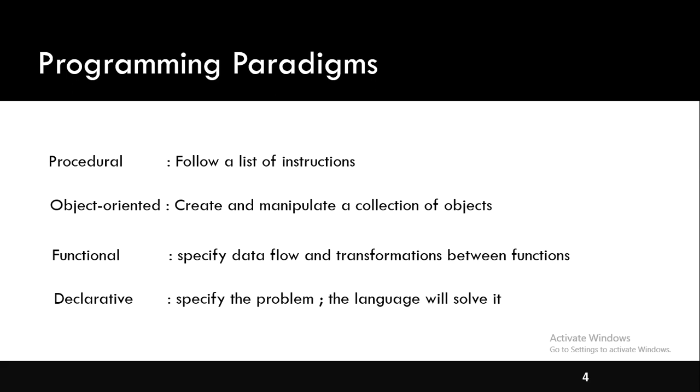Before object oriented programming, languages like C, Pascal, Photon were in use. These were called procedural programming languages. In these languages, programmers use procedures or functions to perform a task while developing software.